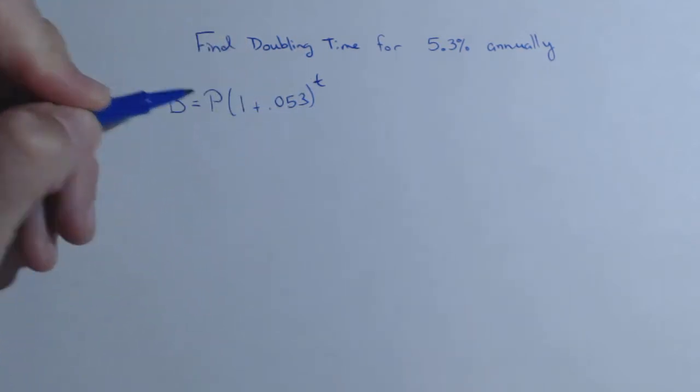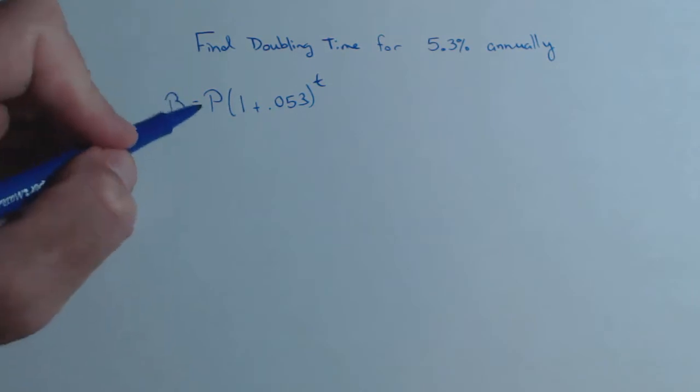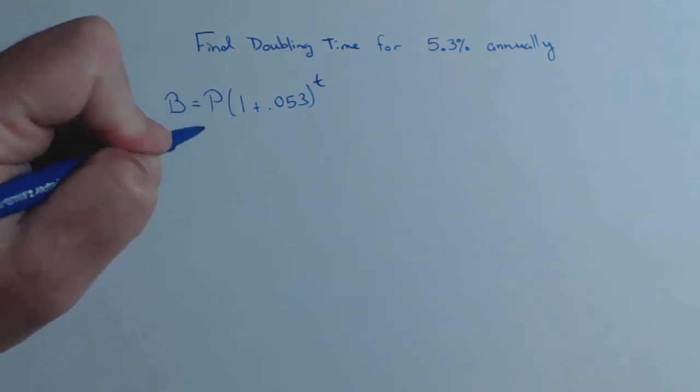Now P is our principal amount and we want to find out when it doubles. Now your options here, you can let P be a number, say 100, 200, you can let P be 1. It's not going to change what the doubling time is because essentially I'm looking for when I have double my initial amount.